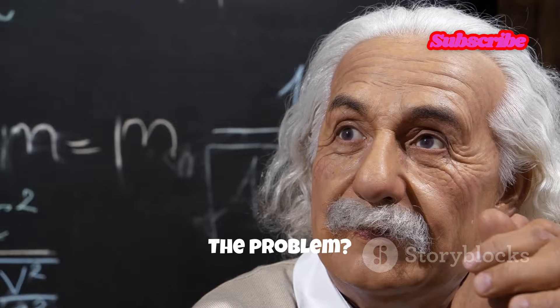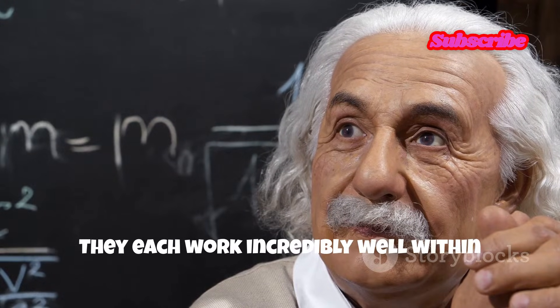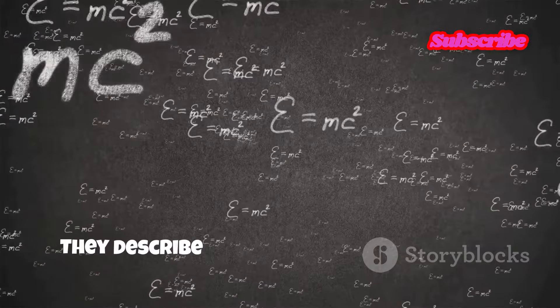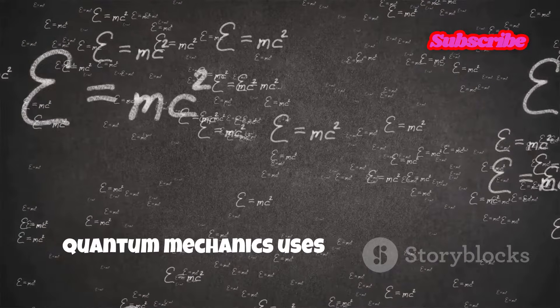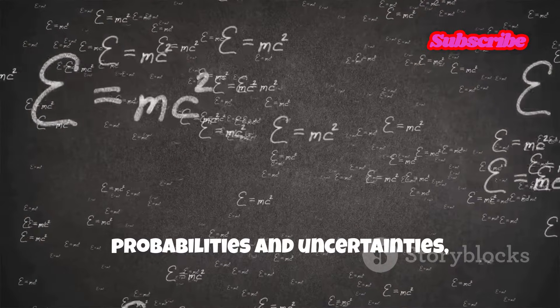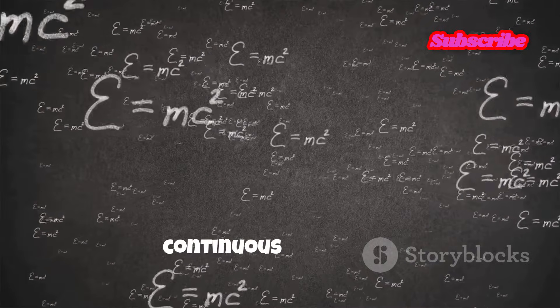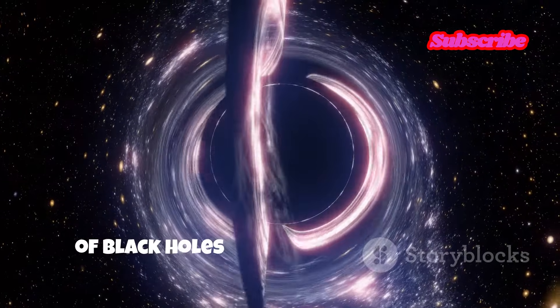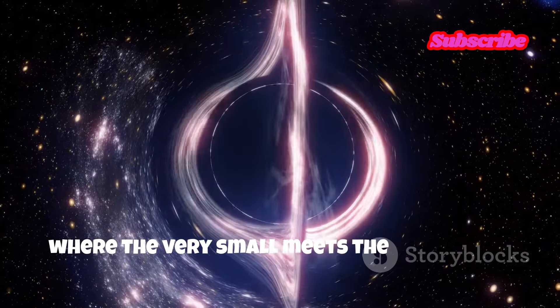The problem? These two theories seem incompatible. They each work incredibly well within their own domains, but fail to reconcile with each other. They describe the universe with different sets of rules. Quantum mechanics uses the language of probabilities and uncertainties, while general relativity speaks in the language of smooth, continuous space-time. This creates a huge problem at the edges of black holes or the very beginning of the universe, where the very small meets the very large.